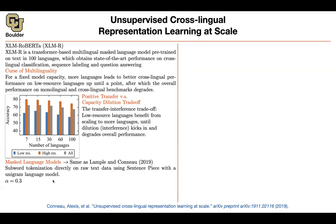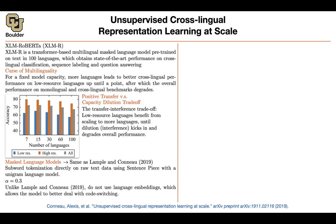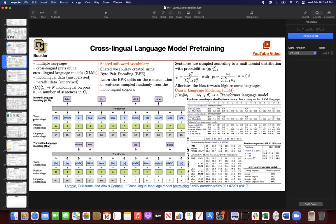In the previous paper, alpha was 0.5, which was scaling down the sampling probability for higher-resource languages. Now we are reducing it even further — alpha is 0.3. Also, in the previous paper there were language embeddings, but here we are removing them. The idea is that the model should be able to identify what language it is on its own when switching between languages, so these embeddings no longer exist.